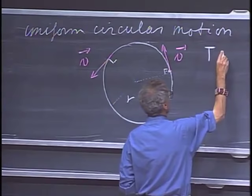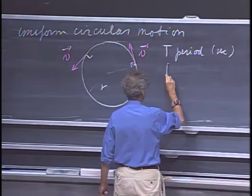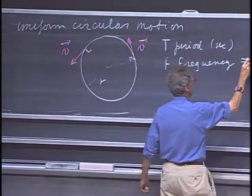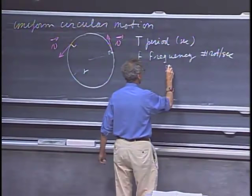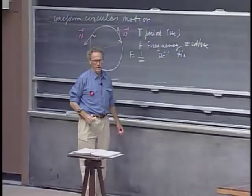We introduce T, what we call the period — measured in seconds — which is the time to go around once. We introduce the frequency f, which is the number of rotations per second. The units are either second-minus-one or, as most physicists would call it, hertz. So frequency is one divided by T.